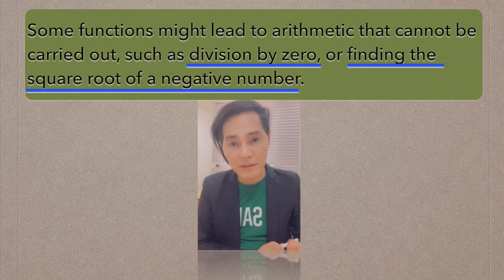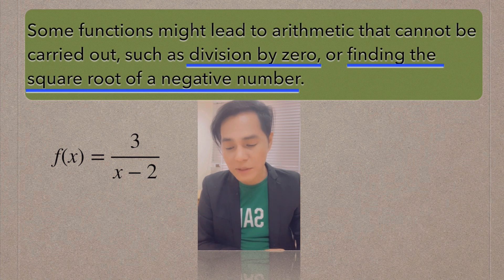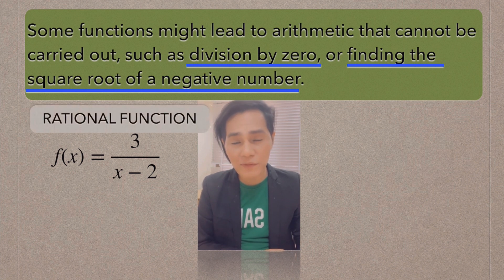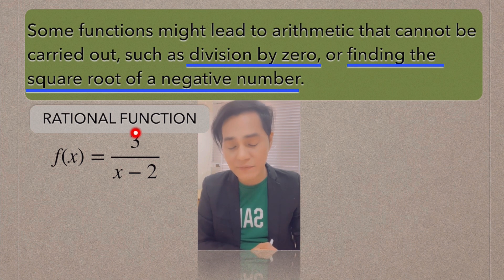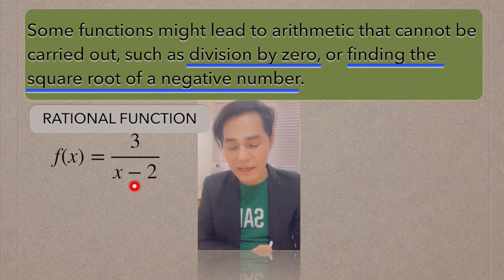I have here an example. Look at this function here, and this is what we call a rational function from the word ratio, meaning fraction. So look at the function here. It is in a fractional form. Look at the denominator. We have here the denominator, which is x minus 2. In this case,